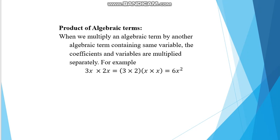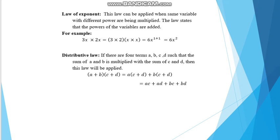For the product of algebraic terms, when we multiply one algebraic term by another containing the same variable, the coefficients and variables are multiplied separately. For example, 3x × 2x: we multiply number by number — 3 × 2 — and variable by variable — x × x — giving us 6x².